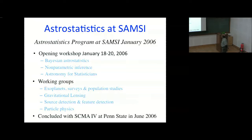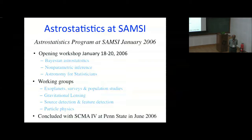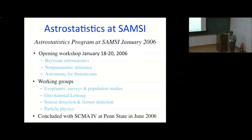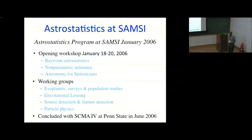What we did was hold tutorials — essentially elementary statistics for astronomers and elementary astronomy for statisticians — so that they could at least understand the language and concepts. At that time we had only four working groups: exoplanets, surveys and population studies. Mind you, Kepler didn't exist at that time. Some of the postdocs who participated in the exoplanet group had a lot of input from statisticians and many concepts were worked out at that time.